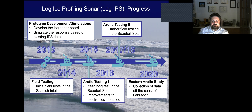A bit of history on the testing of this new log IPS profiling sonar: originally prototyped and constructed in 2013, we conducted initial field tests in 2014 in local waters just north of Victoria. We then took it up to the Arctic and deployed it from 2015 to 2016 and again from 2017 to 2018 for field testing, working out some additional bugs with the circuit board. We finally put this to a real test by developing a collaborative program with partners from the Nunatsiavut Regional Government, deploying a pair of sonars near a feature of interest locally known as a rattle.